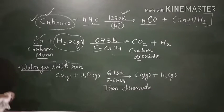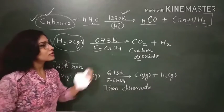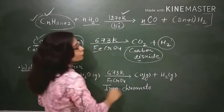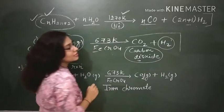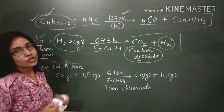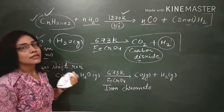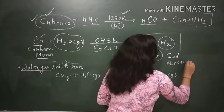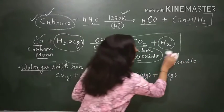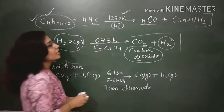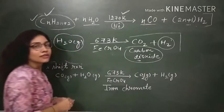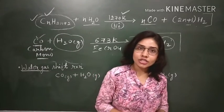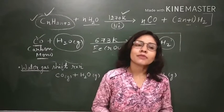From this reaction we get a mixture of CO₂ plus dihydrogen. The CO₂ can be removed from this mixture by scrubbing it with a solution of sodium arsenide. If we scrub this mixture with sodium arsenide, the CO₂ will be removed and we will get pure dihydrogen. That is all about the commercial production of dihydrogen. If you like the video, please like, share, and subscribe. Thank you for watching.